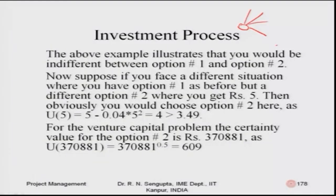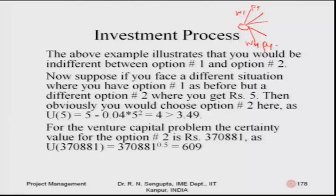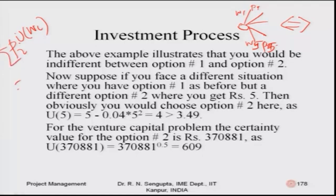In general, for a decision with arms w1 to w5 with probabilities p1 to p5, you compute the sum of p_i times U(w_i) for i = 1 to 5, and equate it to U(C). From that you find out the certainty value C. So multiple arms can also be handled in this framework.